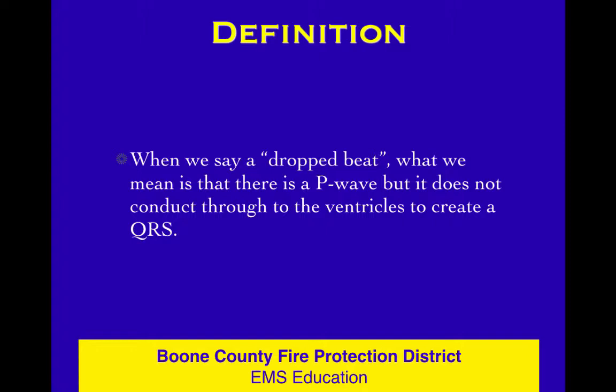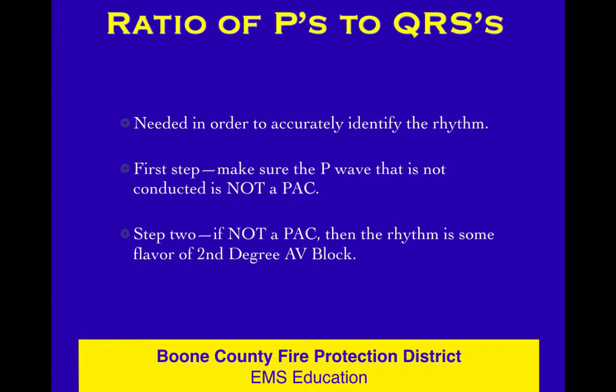When we do our EKG analysis, our stepwise approach is RPM ABC. R is for rate and regularity. The P in RPM ABC - the questions you ask are simple: Is there a P for every QRS, and a QRS for every P? Those are two different questions and you have to ask them both. The ratio of P's to QRS's is important and helps us with the definitions of some of these specific rhythms.